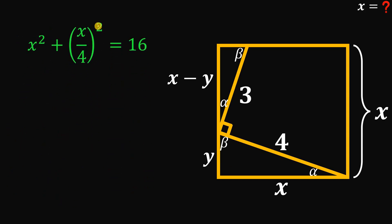Now x over 4 to the power of 2 is just x squared over 16. Now to eliminate this denominator 16, let's multiply all of this term by 16. Now combine like terms. 16x squared plus x squared is 17x squared equals 16 squared.